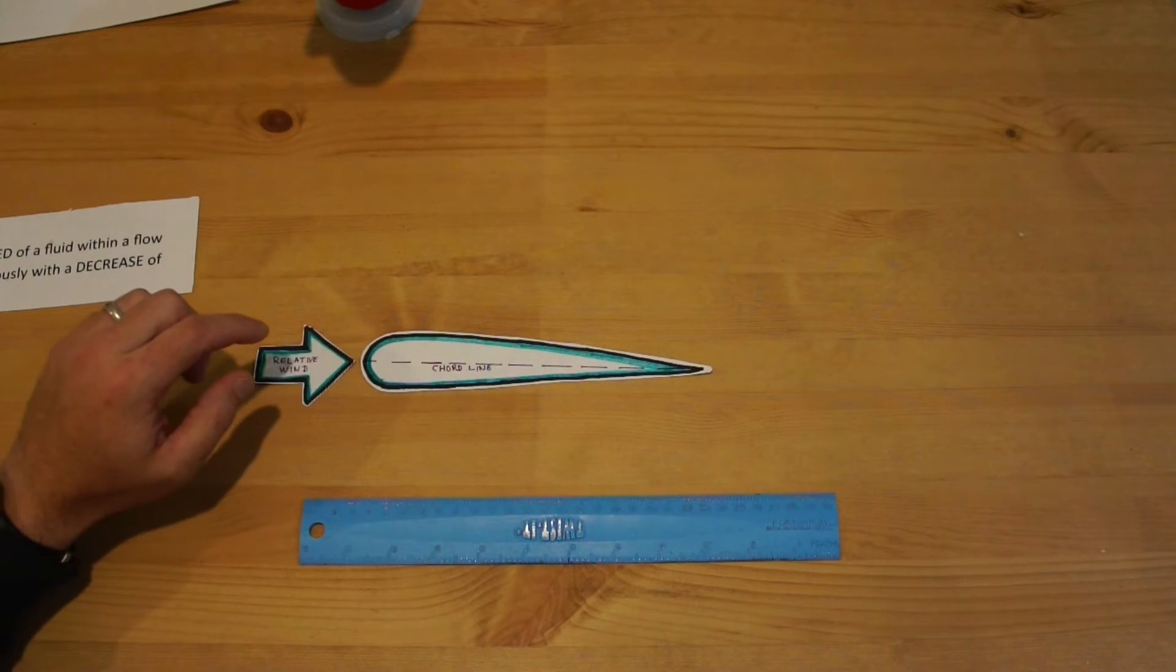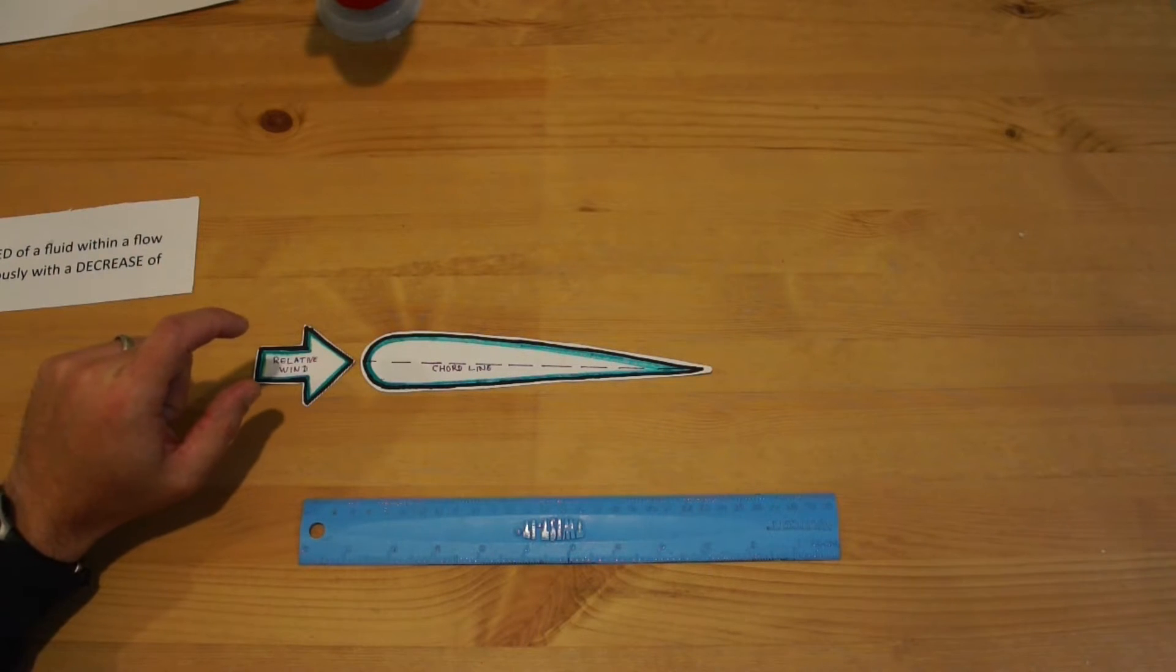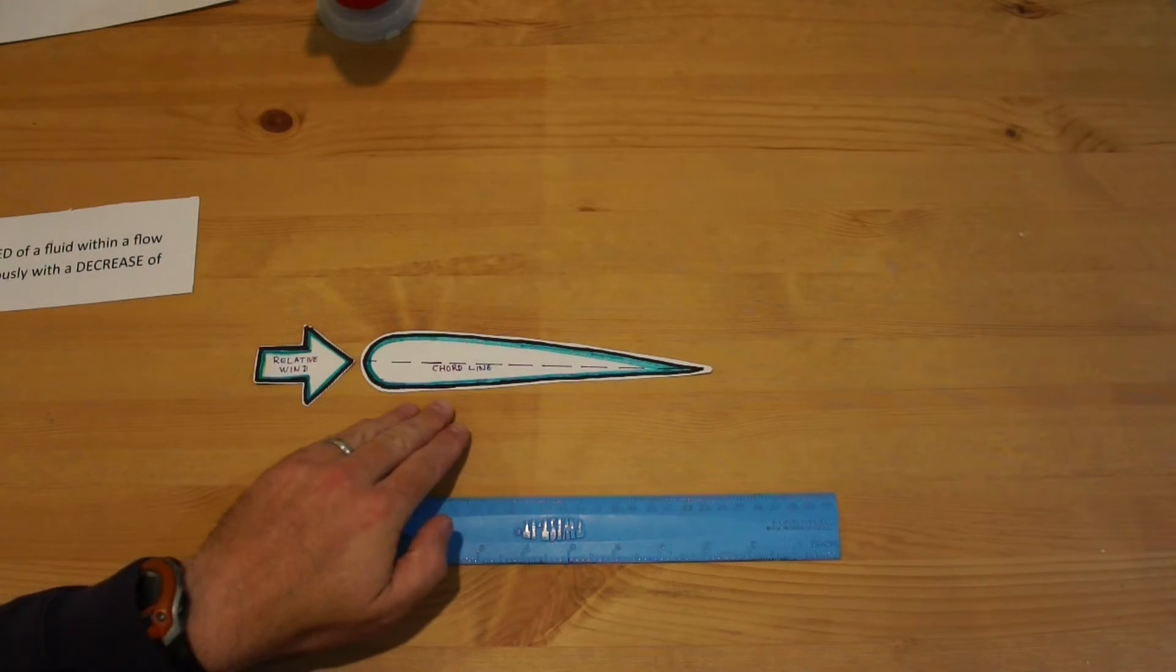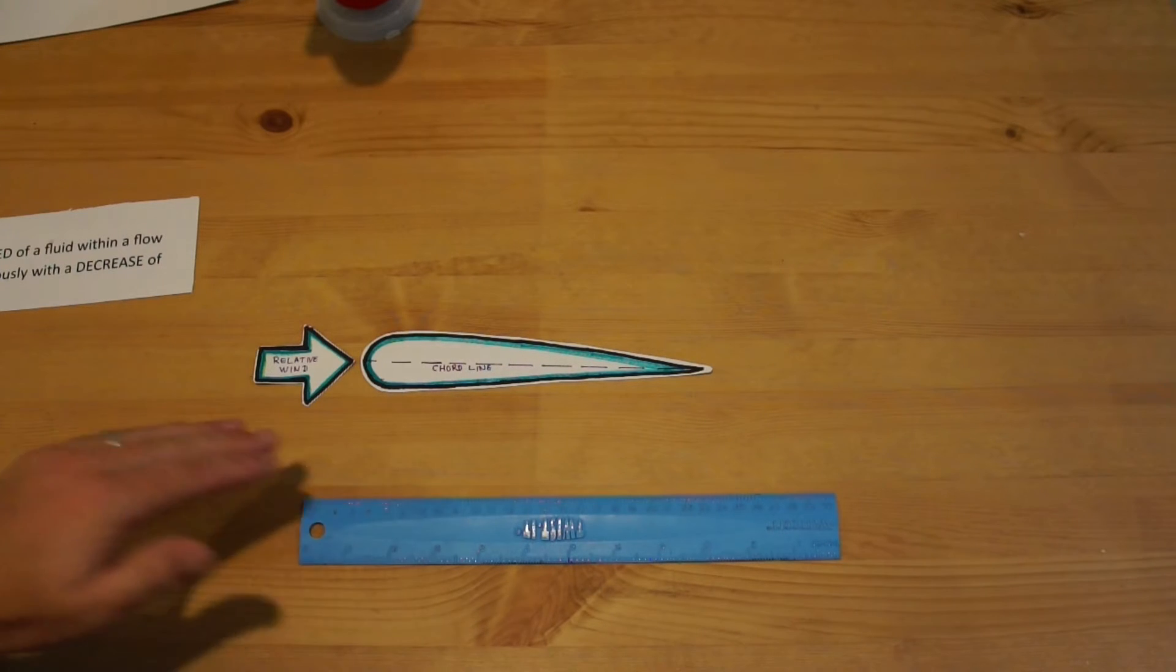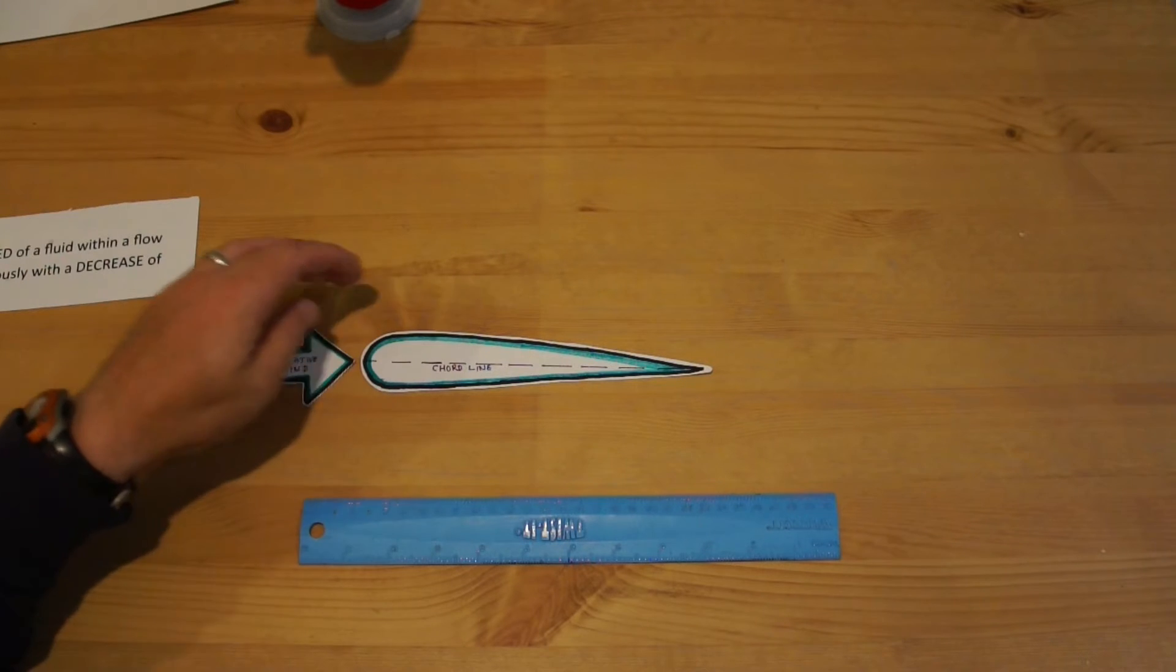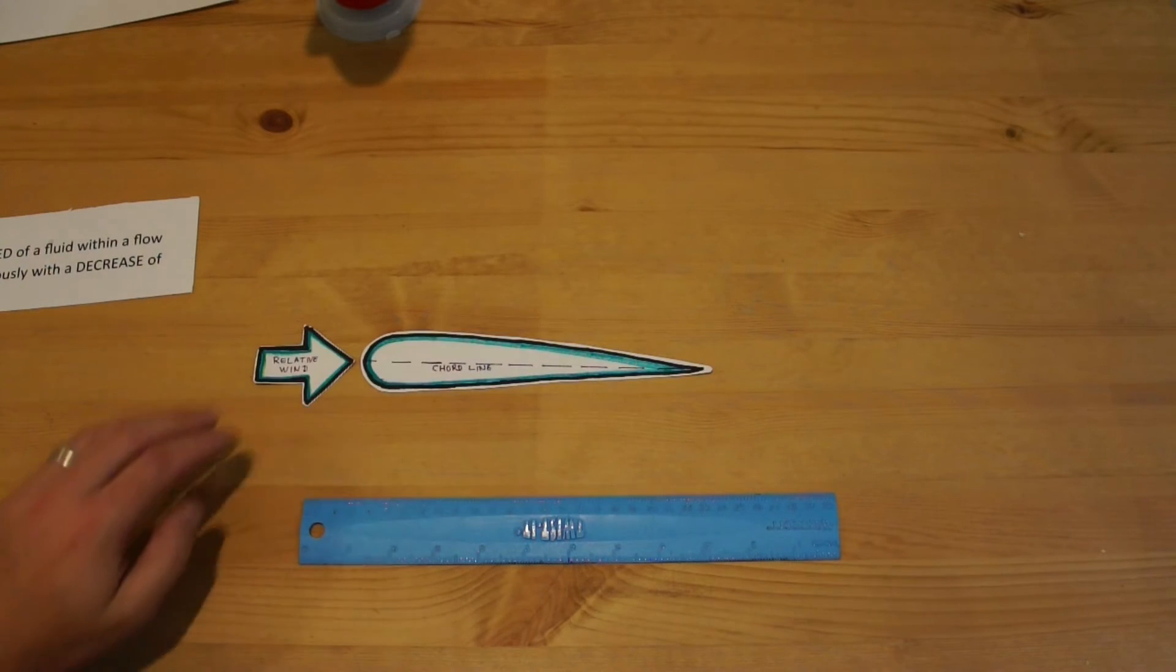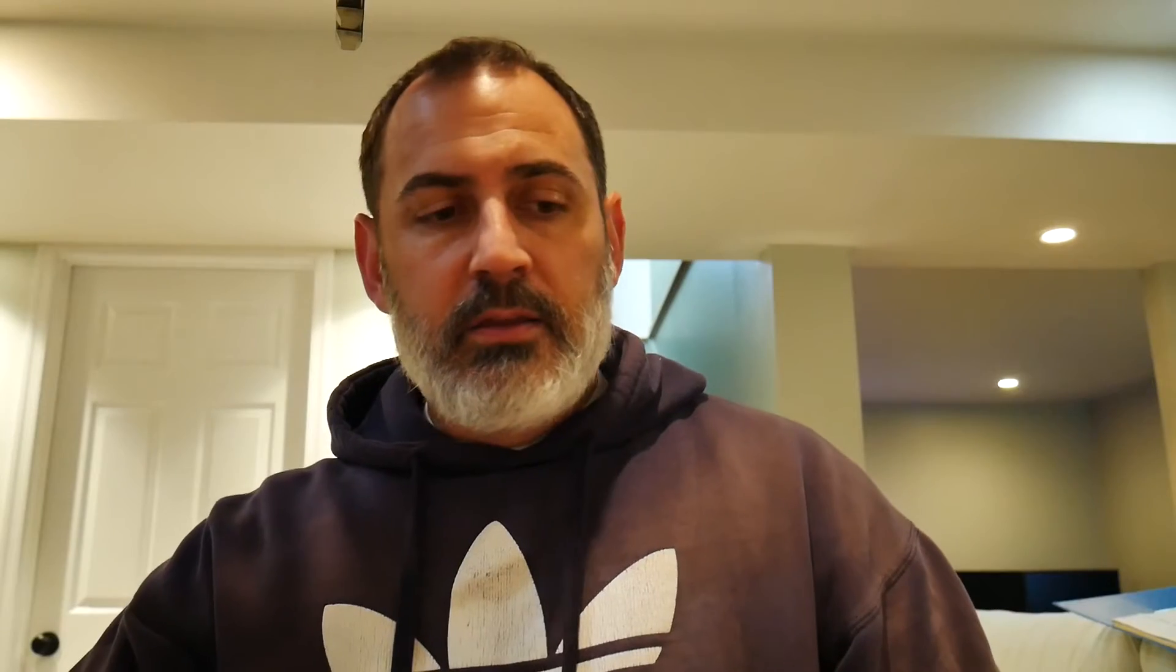Bernoulli's principle tells us that as the air flows faster over the top of the wing, it creates a decrease of static pressure, whereas the air molecules that go under the wing don't change, or in other words they have a higher relative pressure than the air molecules over the top of the wing. When that happens, it causes the wing to lift.